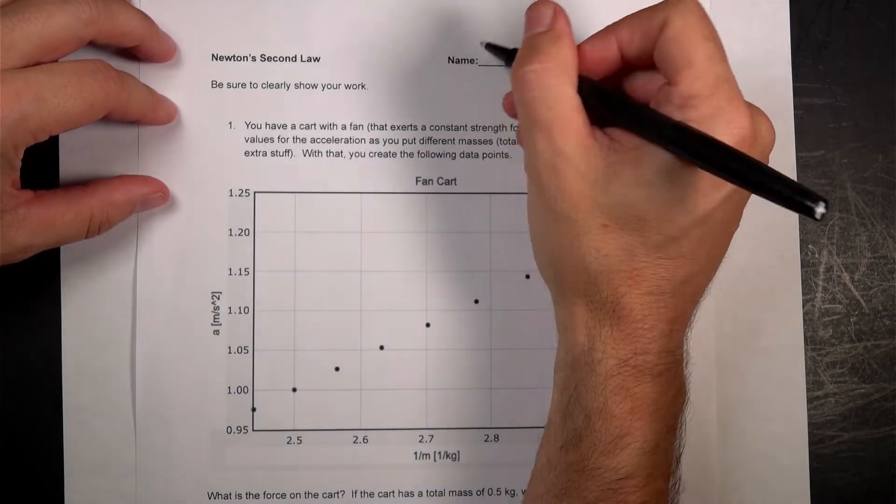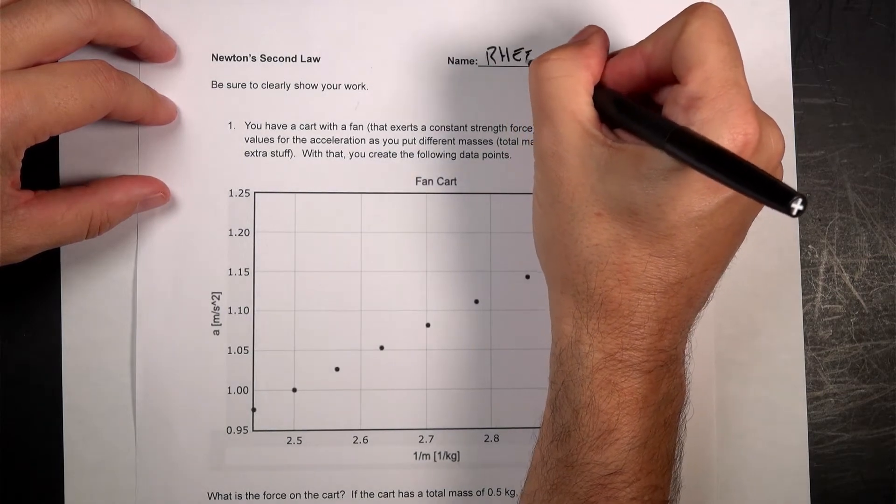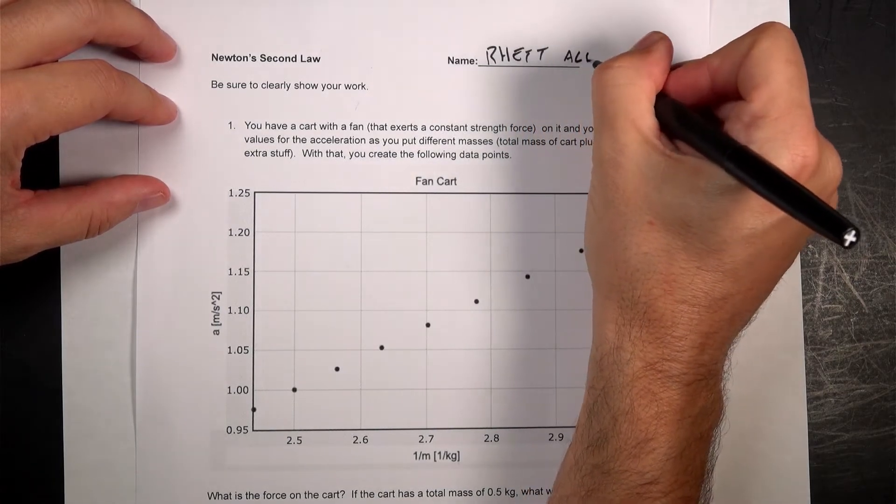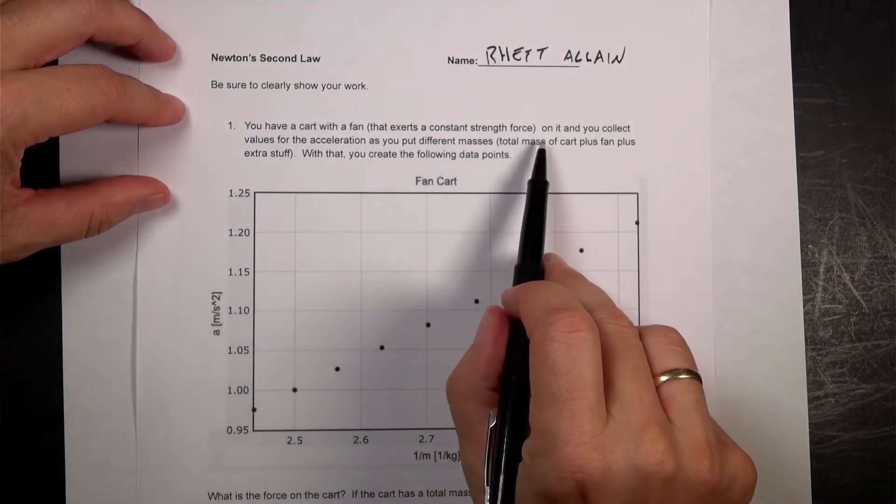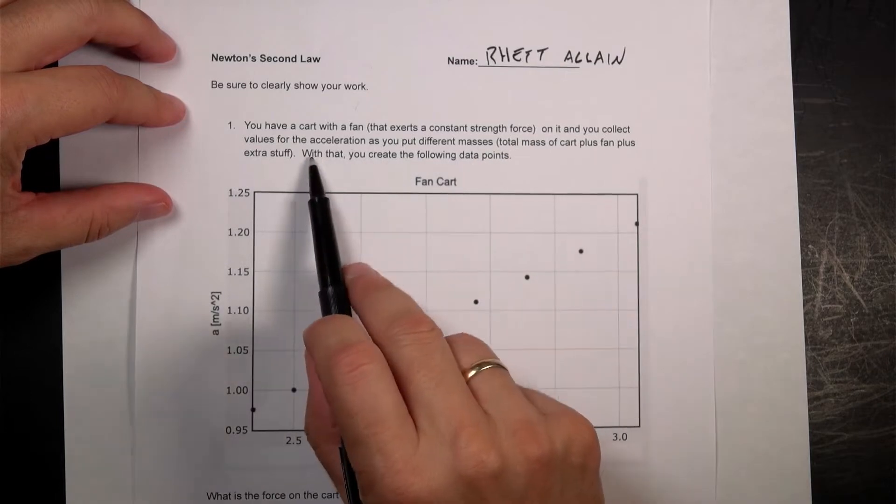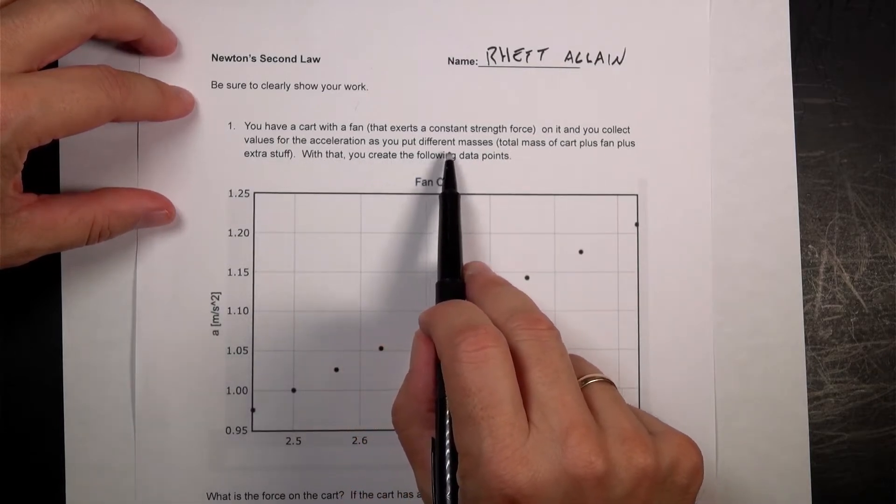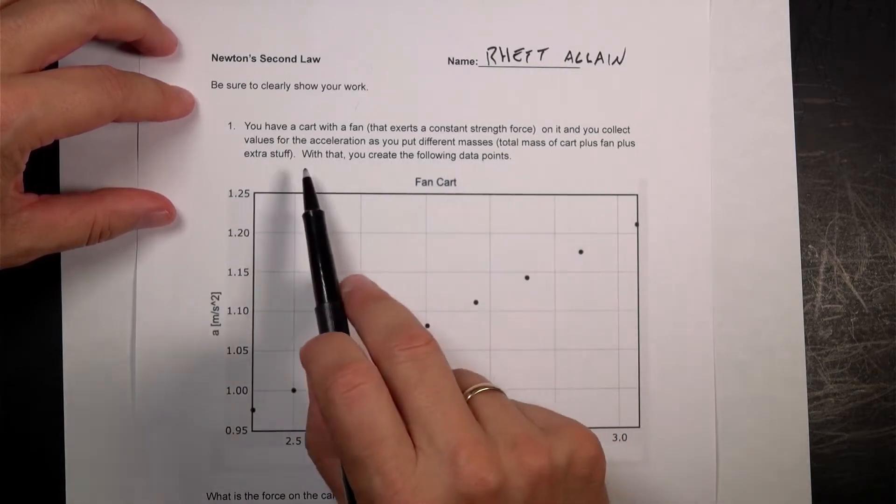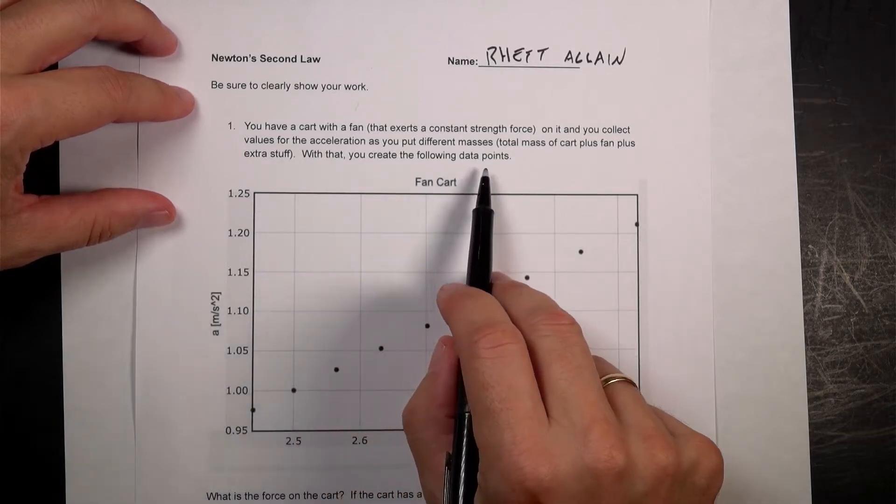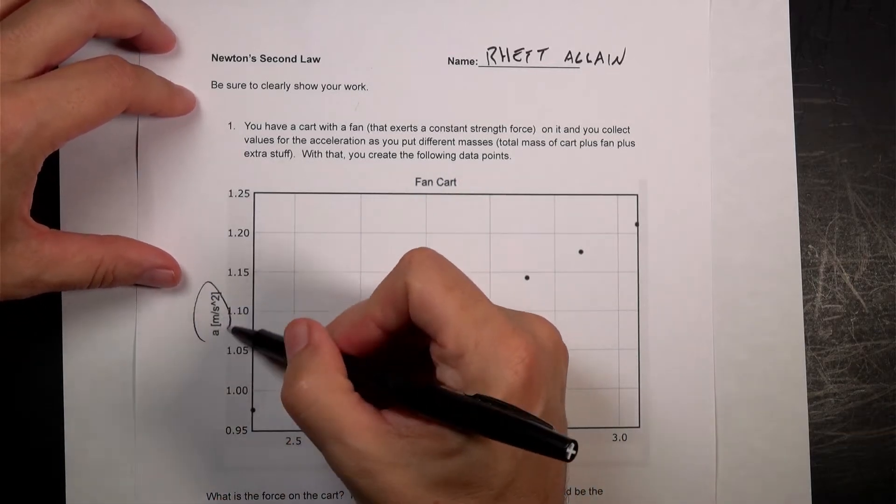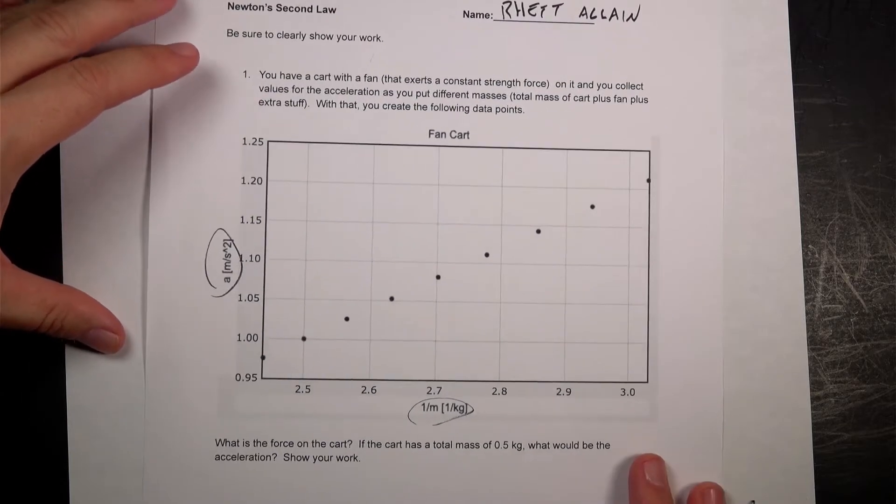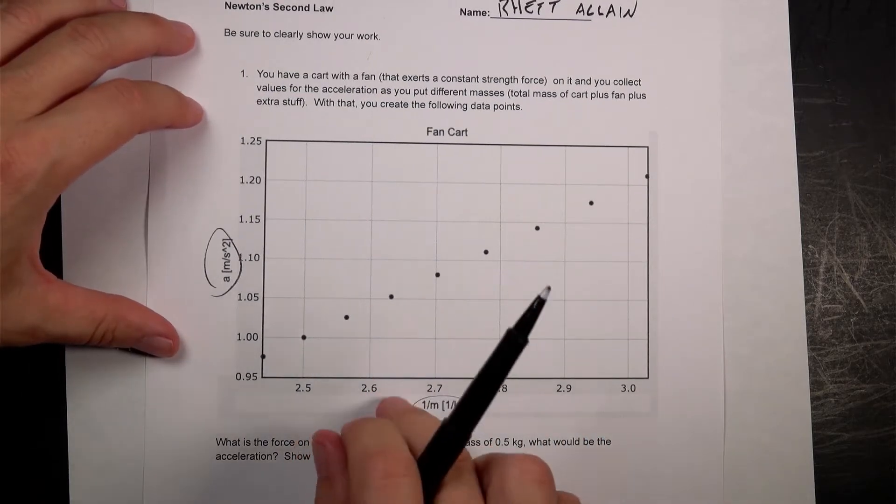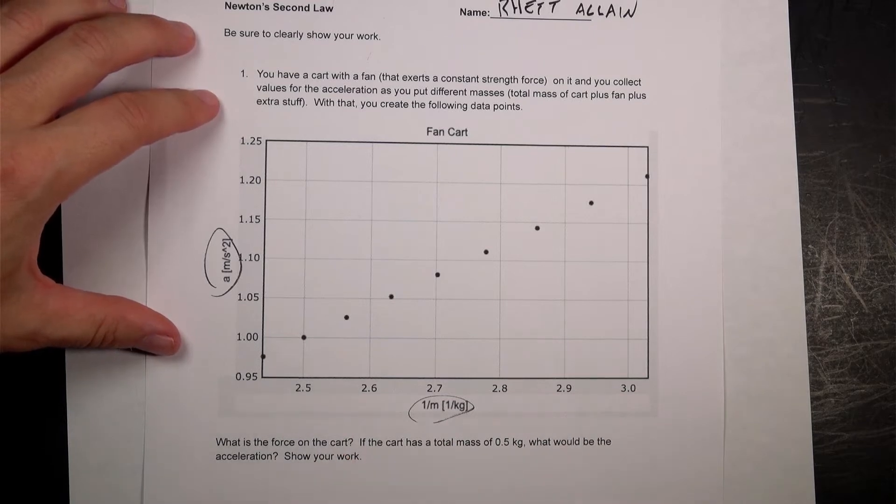I'll put your name. I'm going to put my name there. Okay, so you have a car with a fan that exerts constant strength force and on it you collect values for the acceleration as you would put different masses, the total mass that is, on it. With that you can create the following data points. This is about Newton's second law. This one actually doesn't deal with the lab as much as the second one does.